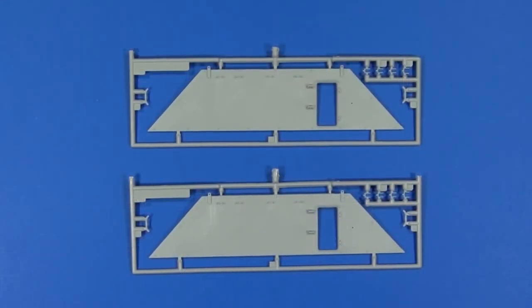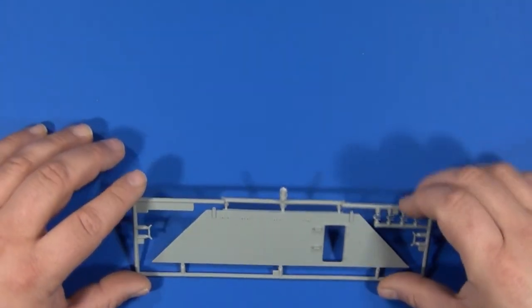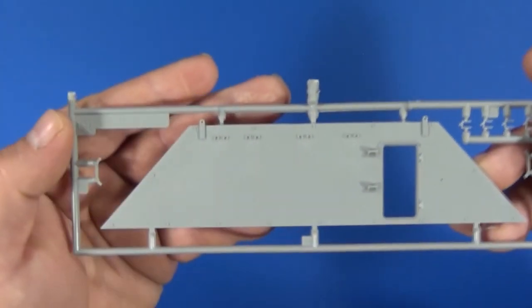These are sprue letter B. They are identical and make up the sides of the vehicle.